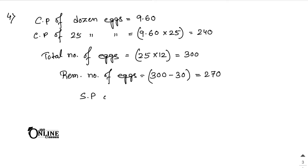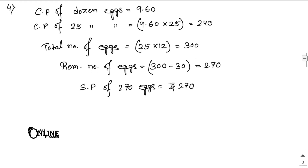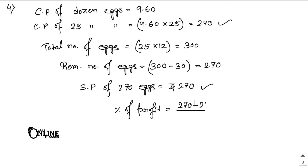She sold the remaining eggs at 1 rupee each, so total SP of 270 eggs equals rupees 270 (1 into 270). CP equals 240 and SP equals 270, so there is profit. Percentage of profit equals 270 minus 240, divided by 240, into 100.